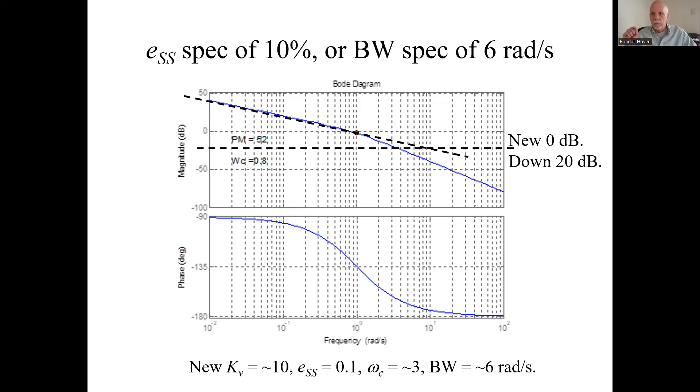Let's say we had a spec of we want a steady state error of 10%, less than 10%. That would mean we want an error constant of 10. The dB that's 20. We need to increase it, so we lower this reference line. This is now our new zero dB line. And now what happens? Well, our Kv is now 10, 20 dB above it.